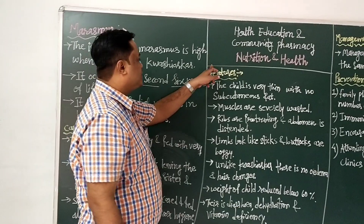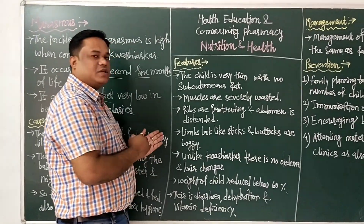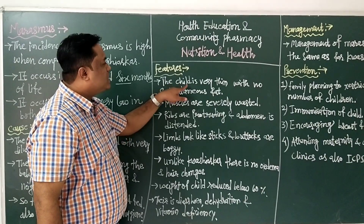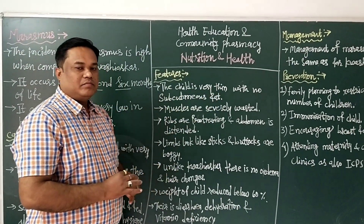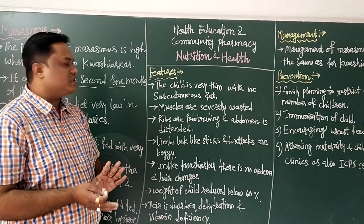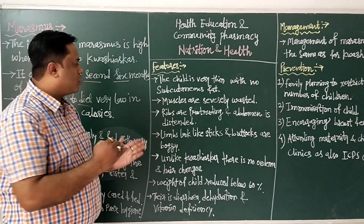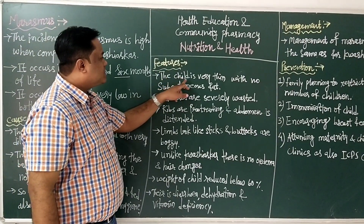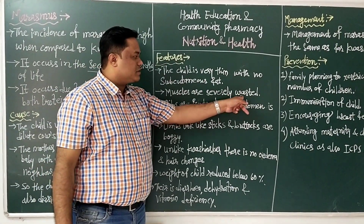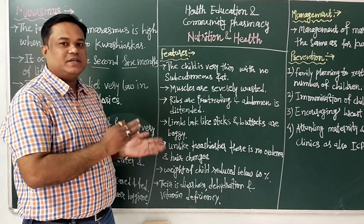Now the features of marasmus: the first is that the child is very thin with no subcutaneous fat, meaning the child is in a very thin condition because there is no subcutaneous fat on the skin or body. The second feature is that the muscles are severely wasted — this is a type of muscle atrophy where the mobility of the muscles cannot be expressed and no physical activity is possible.